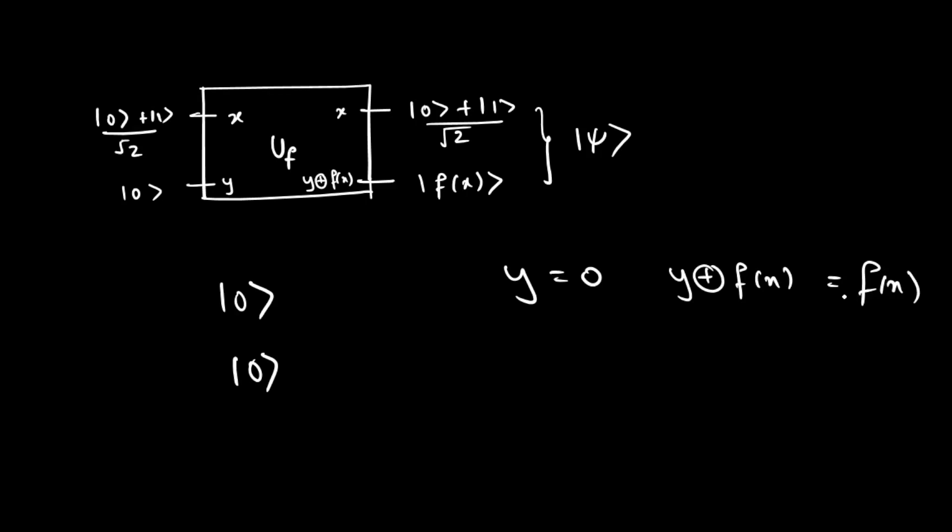This can be understood using the XOR gate. As we can see from this truth table for all values of y the output is the function f(x).